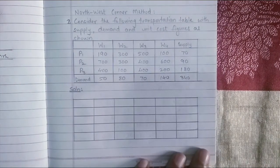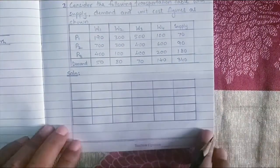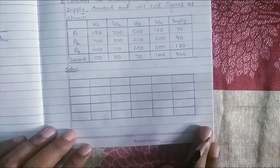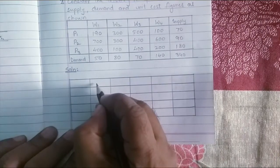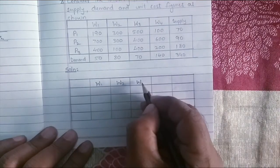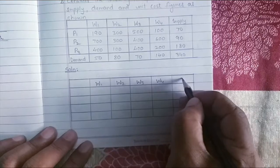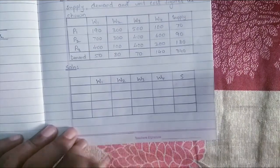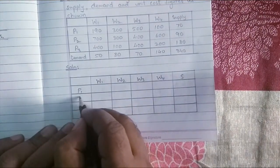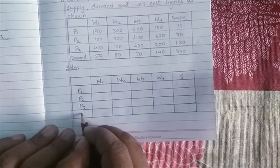We are going to solve this problem using the North-West corner method. I will quickly rewrite this table down below here in a different way. So I have here W1, W2, W3, W4 and the supply. I will put S for the supply. We have P1, P2, P3 and demand.